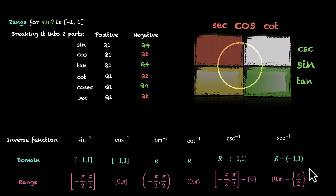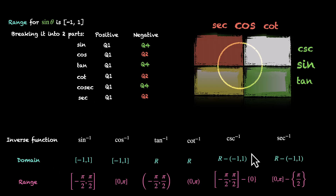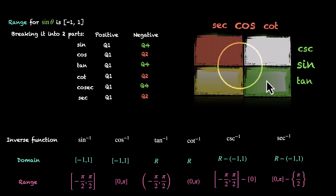To summarize: the domain for all inverse functions is the range of all trigonometric functions. The range for these inverse functions covers two quadrants — for all positive values the range is Q1, and for negative values it's a neighboring quadrant, either Q2 or Q4, depending on which gives the negative value while ensuring a continuous set.